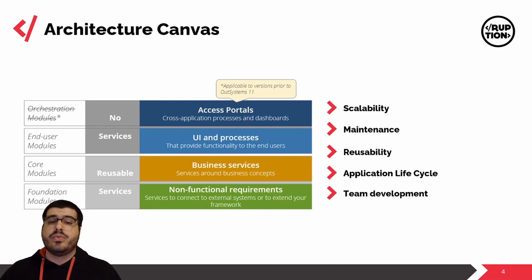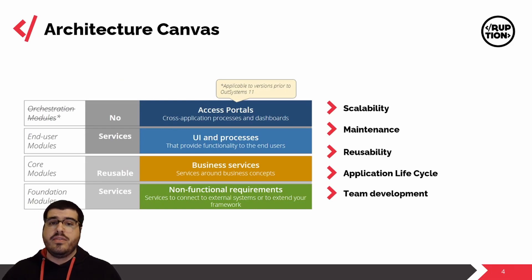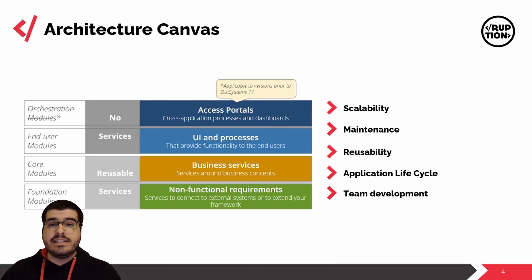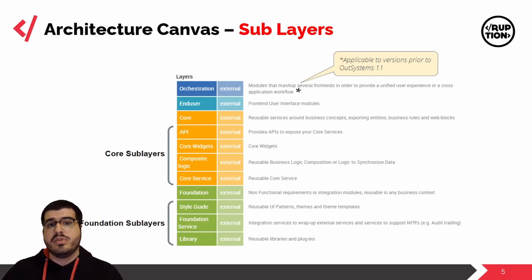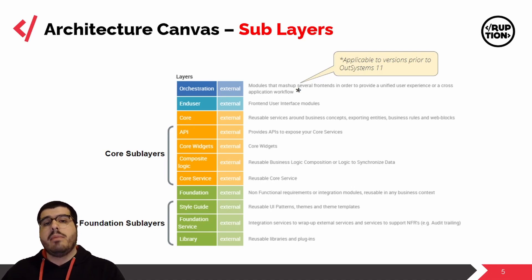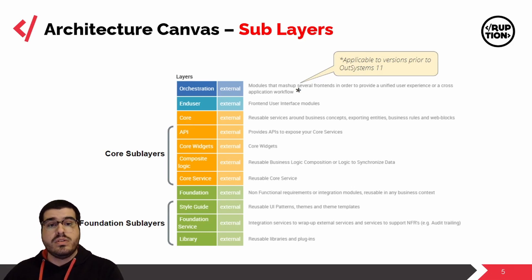If you feel that the four layers — or three in the case of version 11 — don't give you enough information, you can get into a little bit more detail by moving on to the sub-layers. For example, the orchestration layer is composed of only one sub-layer called the orchestration, and this is where you'll have all your modules that mash up several front ends into a seamless user-friendly experience module.